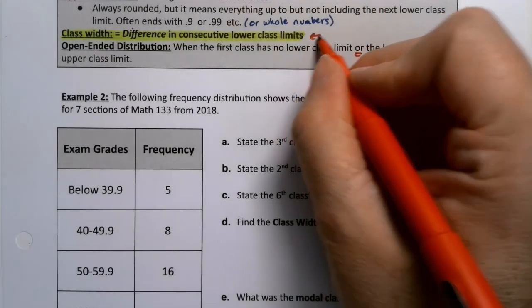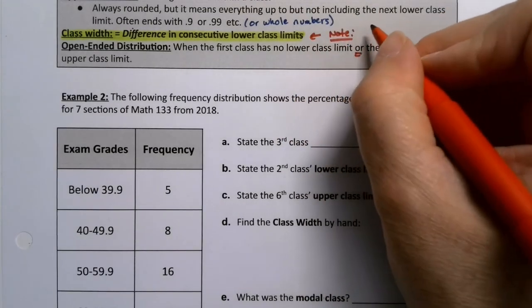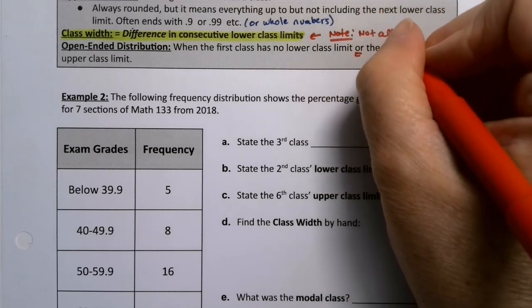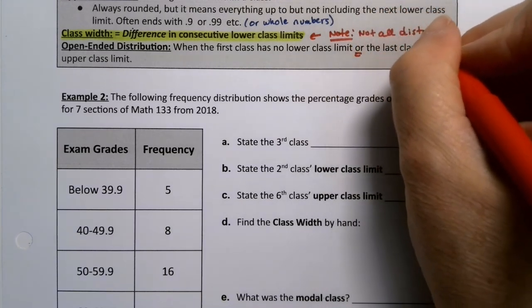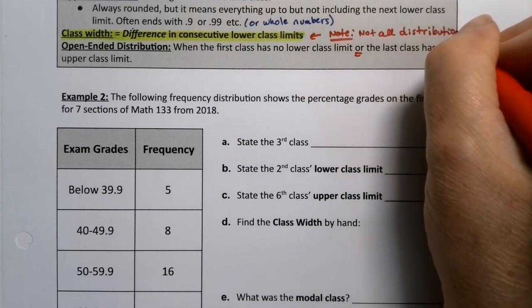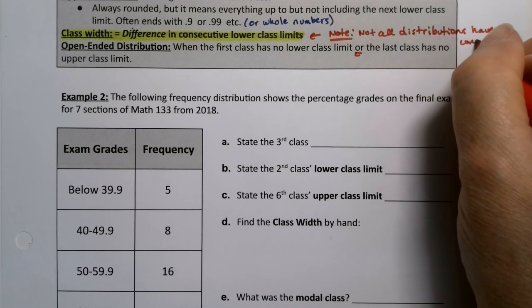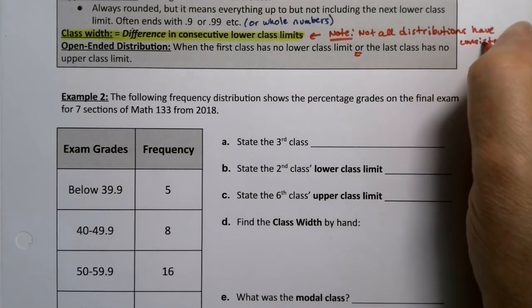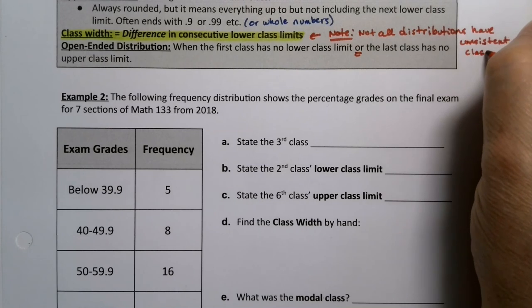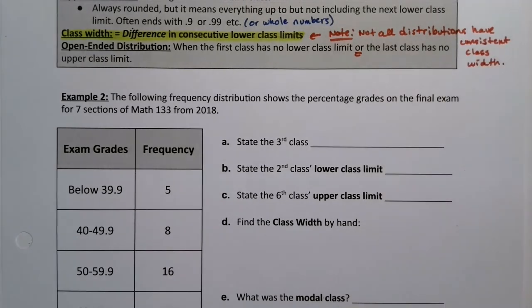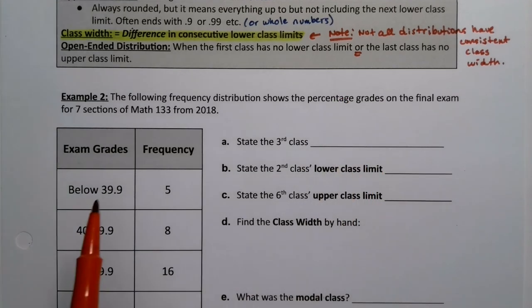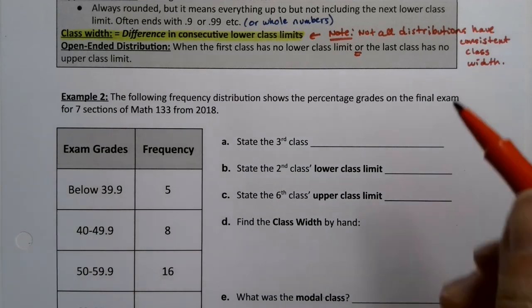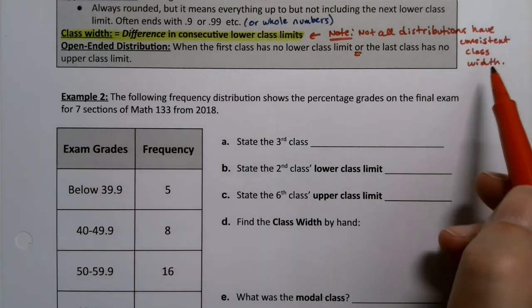Not all tables or distributions have an equal or consistent class width. Now the ones I'm making in the notes generally do, but real life sometimes gets messy. Age, for example, is one that is often not equal. They'll usually do like teenagers or say 16 to 21, and then they'll do 22 to 30. They'll make them different widths for different reasons. They have reasons for what they're doing, but not all distributions have a consistent class width. So that's just a warning to you.